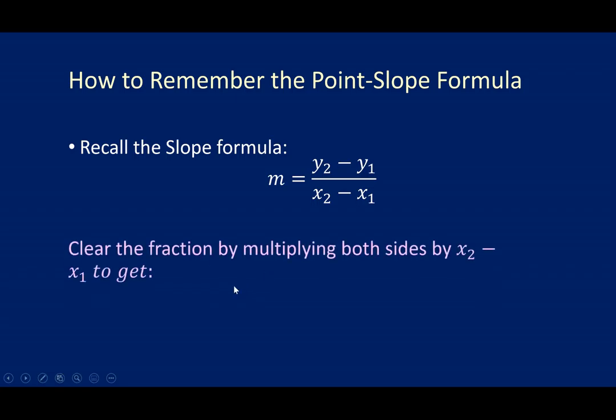Now, if you just clear this fraction by multiplying both sides by the quantity in the denominator, x2 minus x1, you'll get this. And that's the point-slope formula. The only difference in this version of it is that you see a y sub 2 and an x sub 2 instead of just a plain x and a plain y, but you can ignore those subscripts.